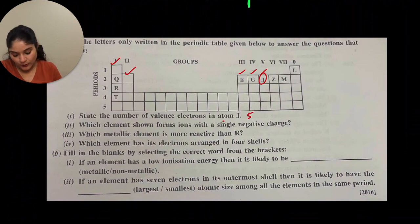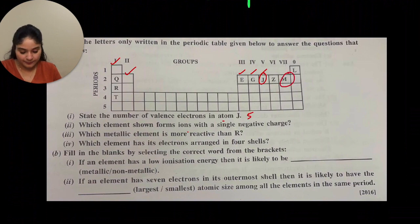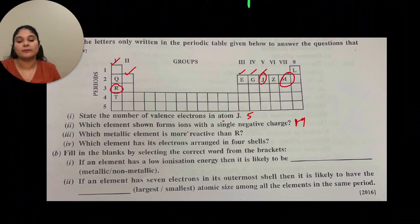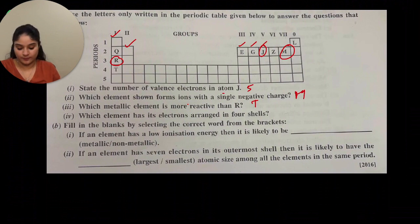Which element forms ions with a single negative charge (−1)? That will be M. Which metallic element is more reactive than R? R is shown on the table — the one below it will be more reactive, so T is more reactive than R. Which element has its electrons arranged in 4 shells? That will be somebody in period 4, so that means T.